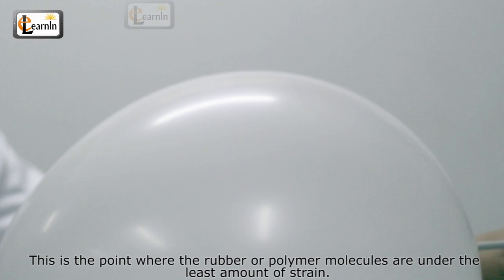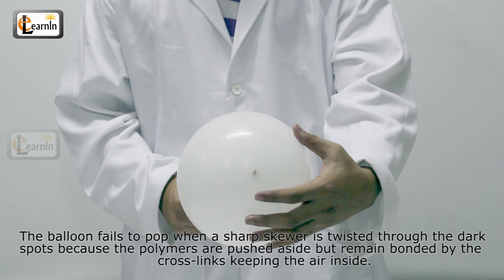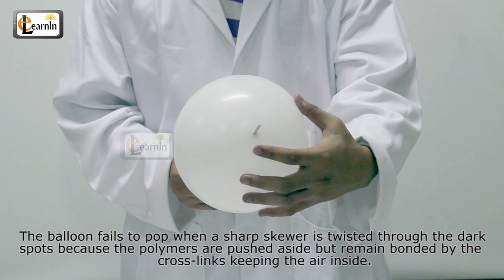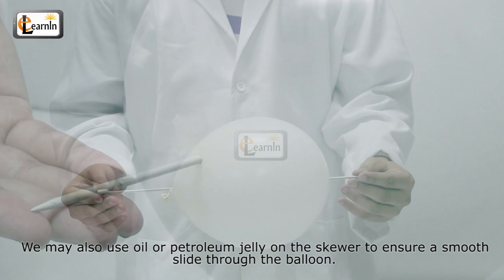The balloon fails to pop when a sharp skewer is twisted through the dark spots because the polymers are pushed aside but remain bonded by cross-links, keeping the air inside. We may also use oil or petroleum jelly on the skewer to ensure a smooth slide through the balloon.